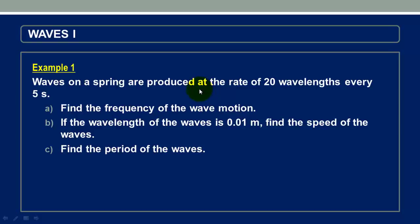In this question, we are told that waves on a spring are produced at the rate of 20 wavelengths every 5 seconds. In part A, we are required to find the frequency of the wave motion. In part B, we are told that if the wavelength of the waves is 0.01 meters, we are required to find the speed of the waves. And in part C, we are required to find the period of the waves.